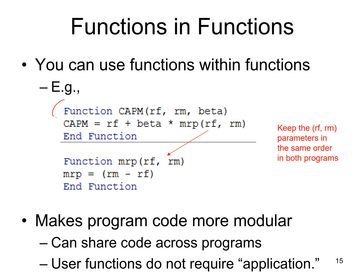This function we've written before, CAPM, starts with the word function. The function is called CAPM and has three parameters: RF, RM, and beta. The ending line is end function, and then we have the line where the function name gets a value, which is RF plus beta times MRP.